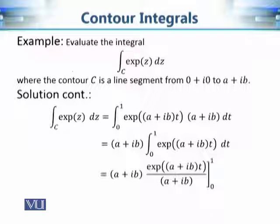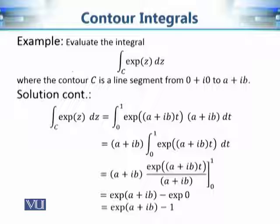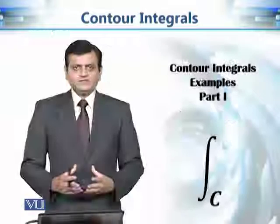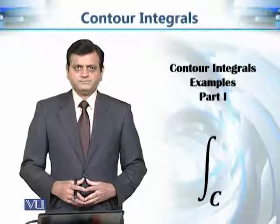Applying the limits of integration and using the fundamental theorem for complex integrals, we get e^(a+ib) − e⁰ = e^(a+ib) − 1. This simple example demonstrates the combined use of our knowledge about contours, evaluating contour integrals, and integrating complex-valued functions of one real variable. In the next modules we will discuss more complicated examples.